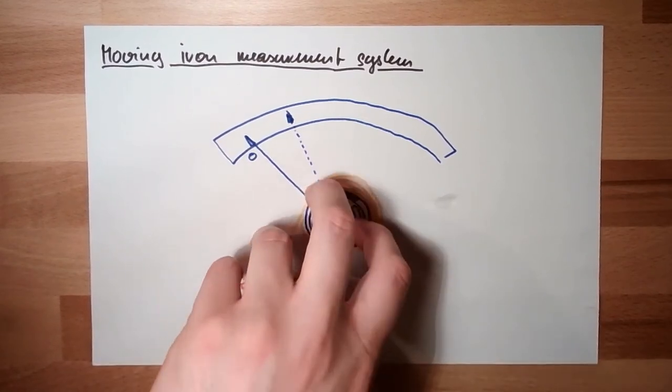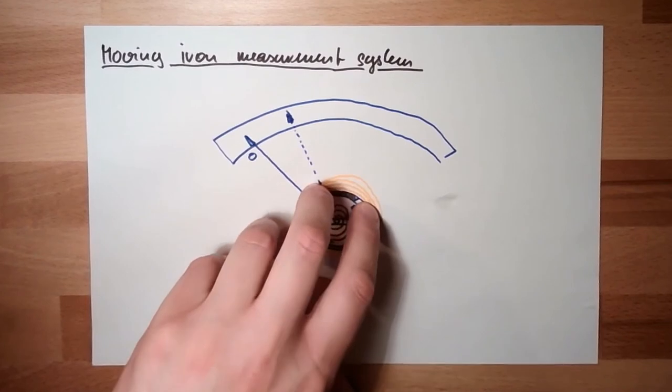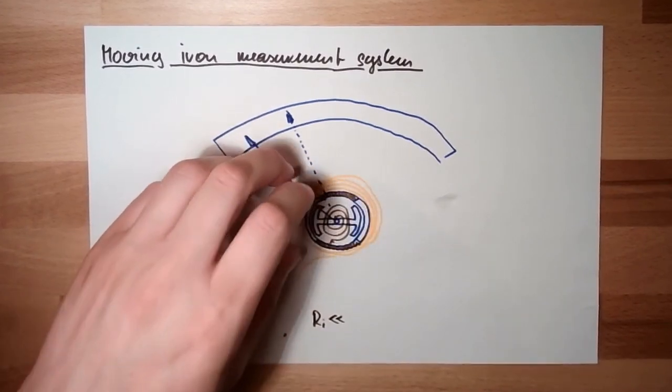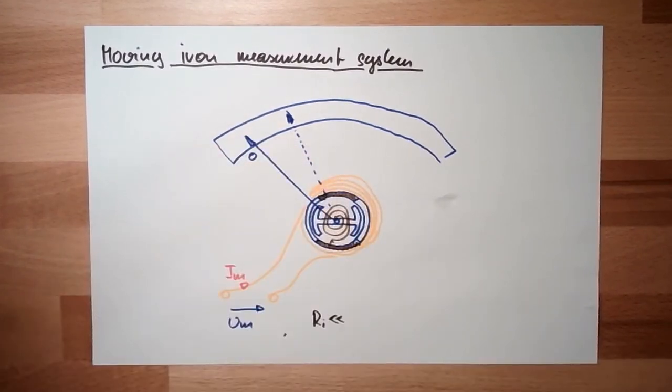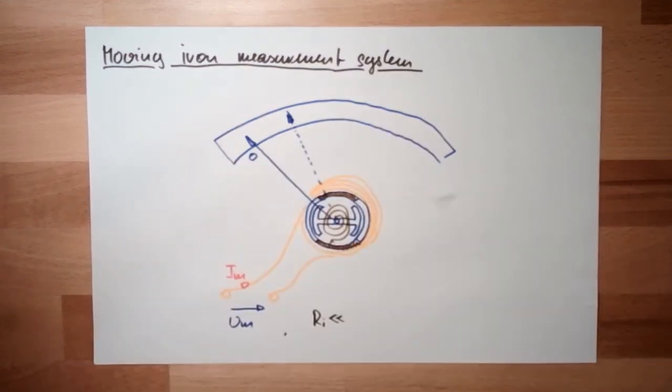Things like this are often used in measurement systems which are built in cabinets or walls. Measurement systems which are directly built in cabinets are often these moving iron things.